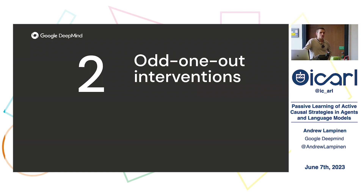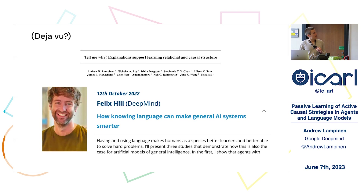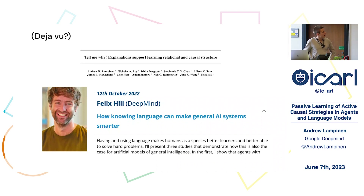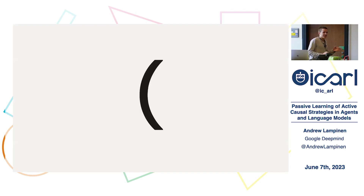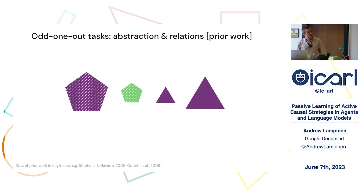That was a toy environment where observations were just vectors with directly observable variables. The next step is to extend to an environment with more complex task structure and high-dimensional visual observations. I used an odd-one-out intervention environment from previous work. The agent is placed in a room with four objects, and its goal is to choose the object that is unique in some way — for example, the green pentagon. The task is made hard by having four objects varying along dimensions like color, shape, size, and texture, and the initialization is such that looking at any proper subset of objects won't tell you the answer.